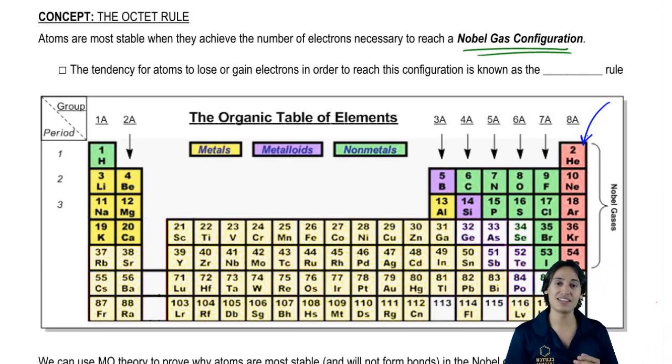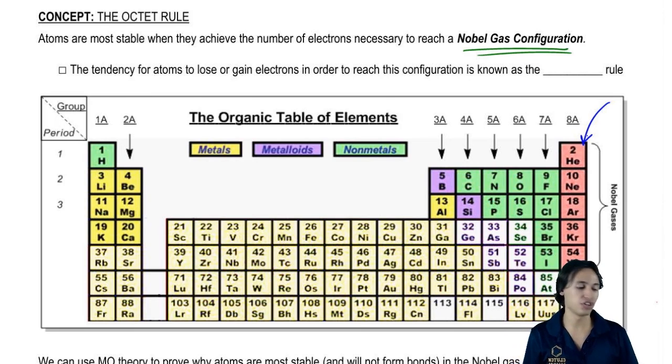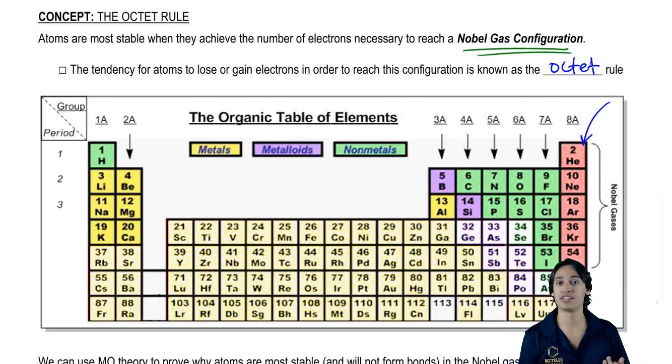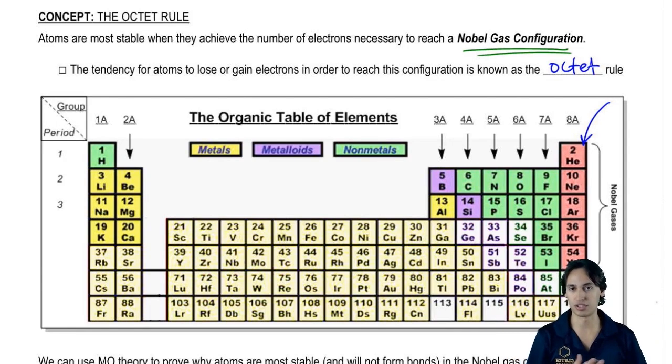And actually, this tendency to gain or lose electrons in order to reach that configuration is what's known as the octet rule. So when I say octet rule, all I'm really talking about is how can this atom become like a noble gas in terms of electrons.